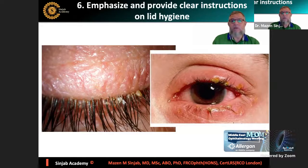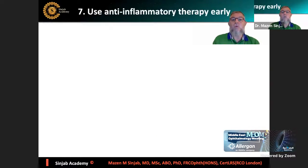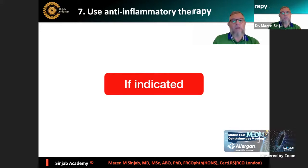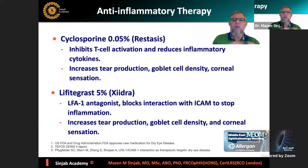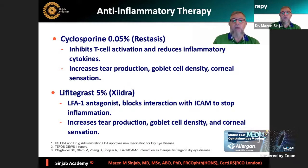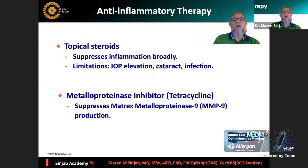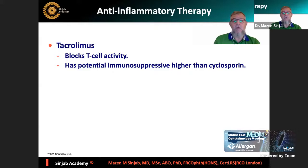Provide clear instructions on lid hygiene. When you see collarettes, have suspicion for Demodex. Use anti-inflammatory therapy as early as possible, only when indicated - not as a habit. Anti-inflammatory options include cyclosporine (inhibits T-cell activation, increases tear production, goblet cell density, and corneal sensation), lifitegrast (LFA-1 antagonist, increases tear production and goblet cell density), topical steroids (short-term only due to IOP elevation, cataract, and infection risk), tetracycline, metalloproteinase inhibitors, and tacrolimus.